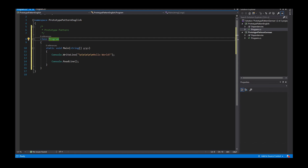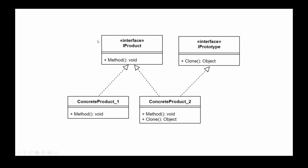If we look into the UML diagram, we see an interface called IProduct and this interface is implemented by two objects: ConcreteProduct_1 and ConcreteProduct_2. This interface provides a method which is also implemented in the concrete products. To implement the prototype pattern, we implement an interface I call IPrototype that provides a method called Clone. ConcreteProduct_2 implements this prototype interface and provides the Clone method.